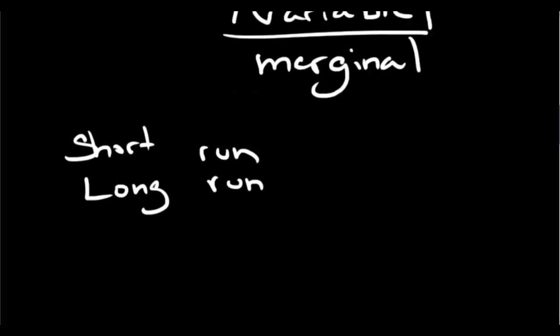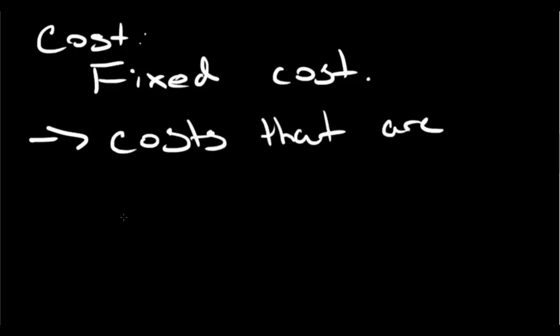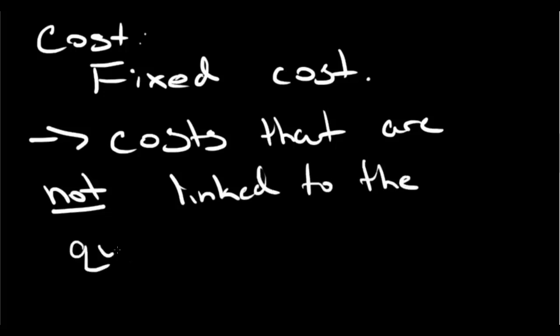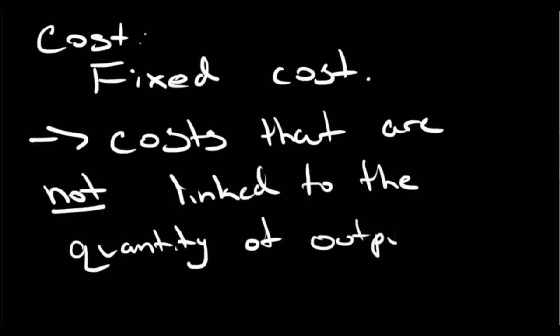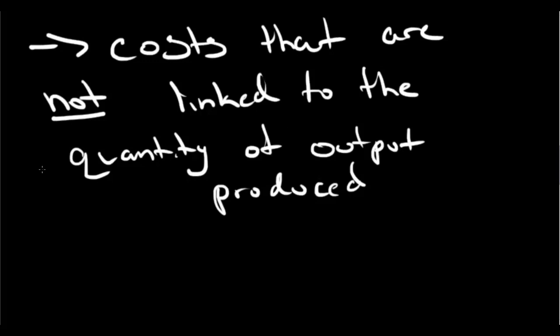Getting back to costs — our first type is a fixed cost. Fixed costs are costs that are not linked to the quantity of output produced.